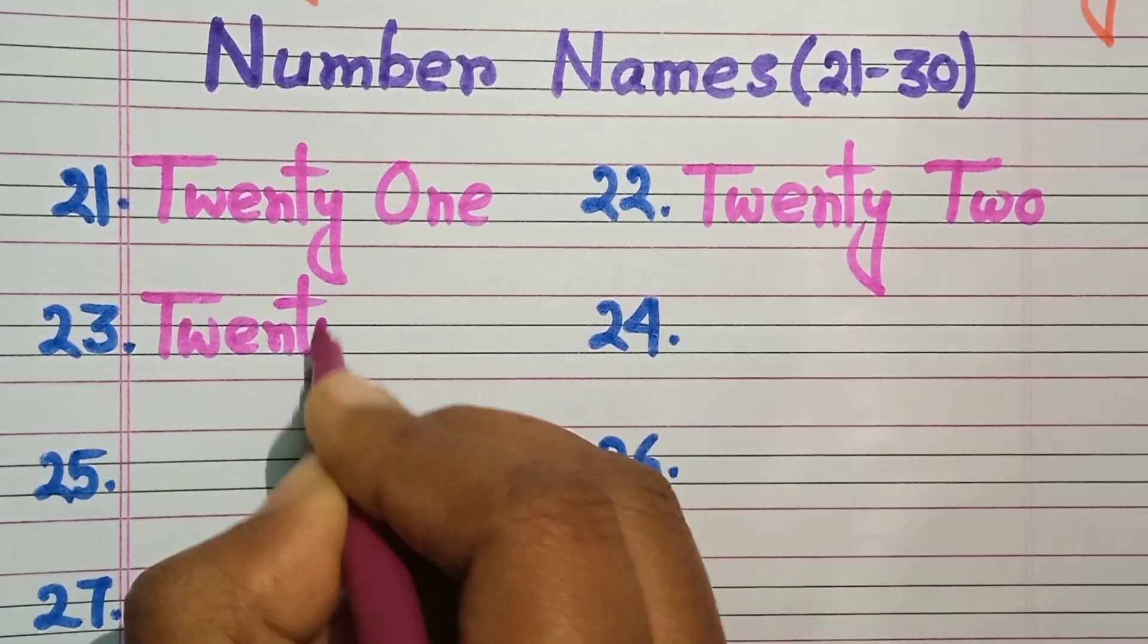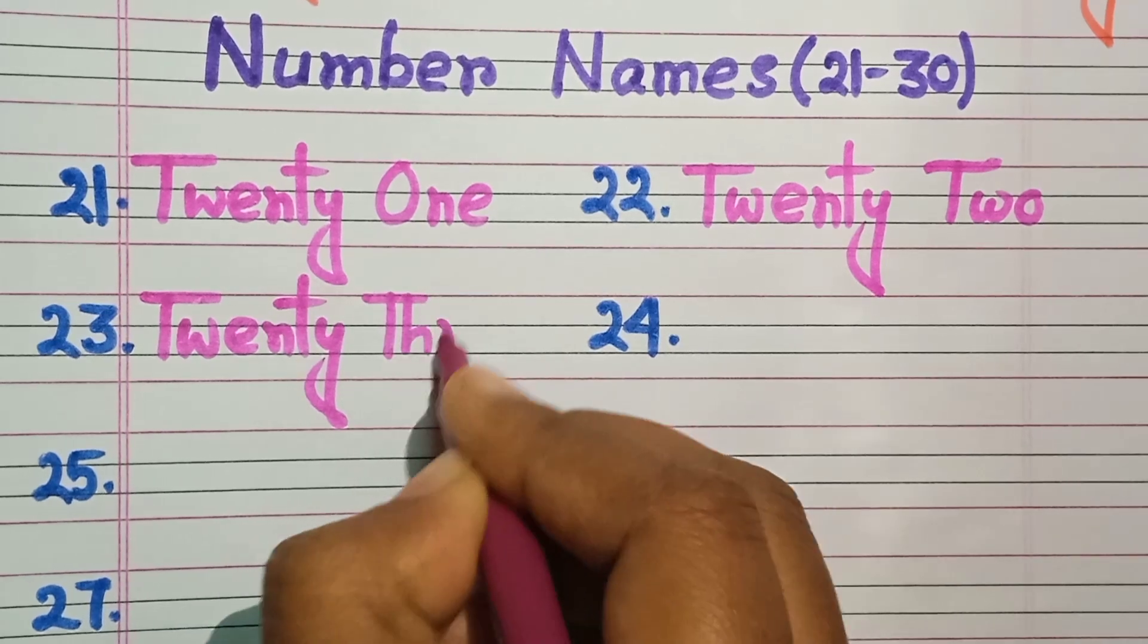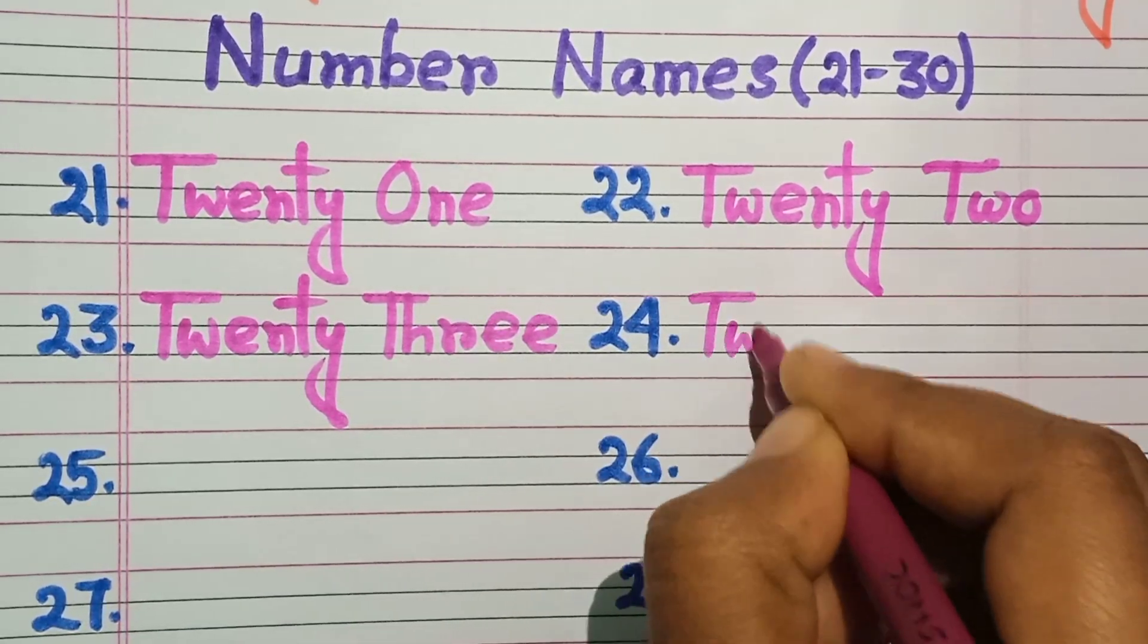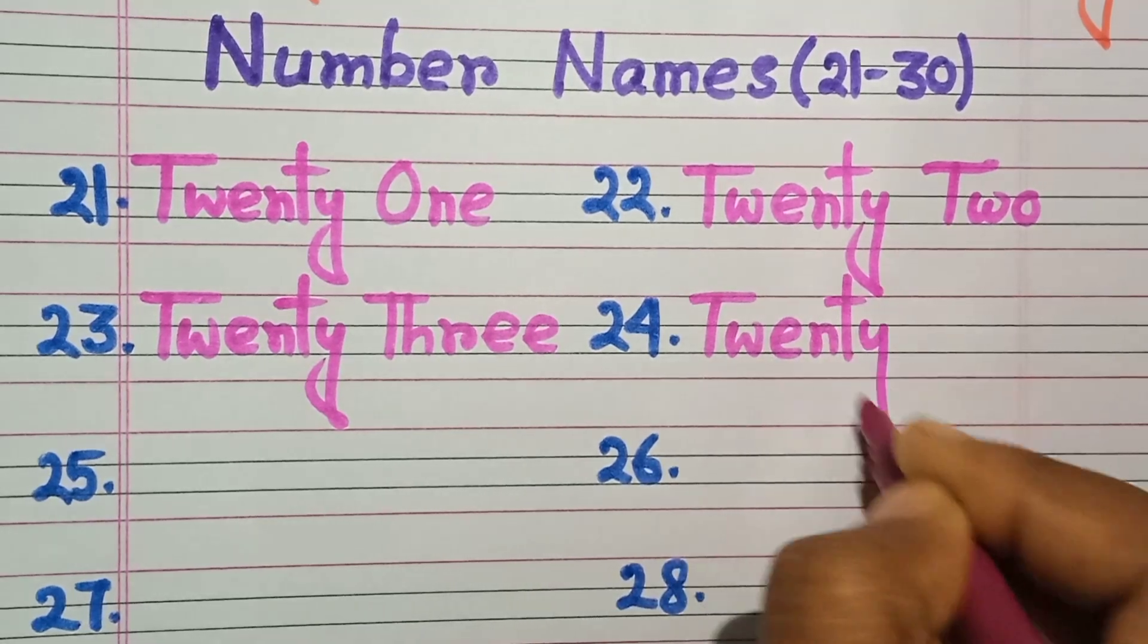23. Twenty-three. T-W-E-N-T-Y, twenty. Three, T-H-R-E-E. 24. Twenty-four. T-W-E-N-T...